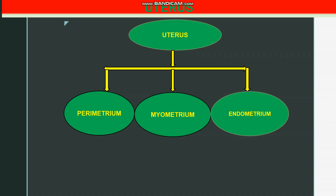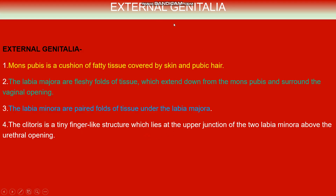The myometrium plays an important role during childbirth. The innermost layer is the endometrium, which is highly vascularized and richly glandular, and undergoes cyclical changes during menstruation. So, myometrium plays an important role during childbirth, whereas endometrium plays an important role during menstruation.